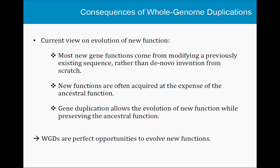When you have a duplication of the entire genome, that presents thousands and thousands of opportunities to evolve new functions. There are clear examples — in yeast, it's been shown that one of the reasons yeast is so good at fermentation is thanks to the whole genome duplication, because the whole set of duplicates became specialized into the fermentation process. So next time you enjoy a beer, remember it was made possible by whole genome duplications.